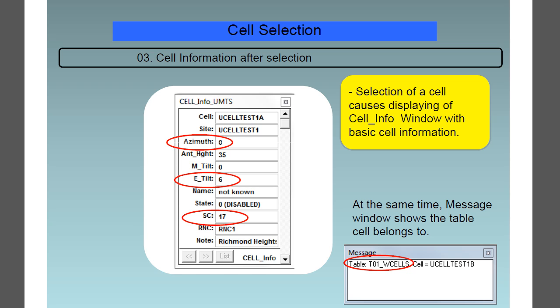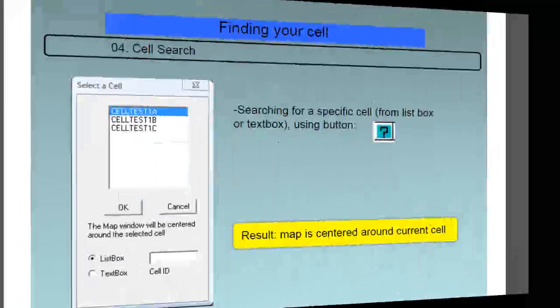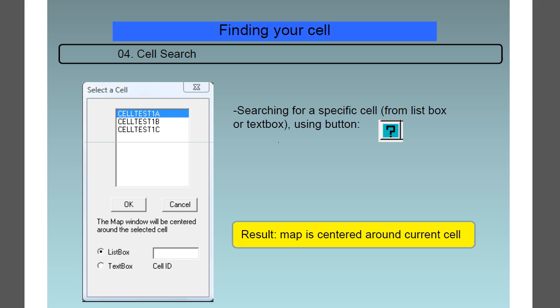Feature number 4 is the cell search. You can search for a specific cell from the list box or the text box using the search button, and as a result, the map is centered around the current cell.